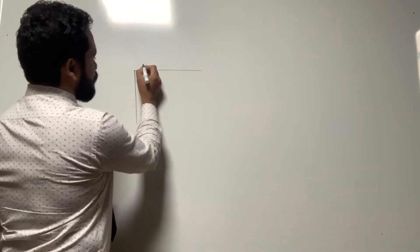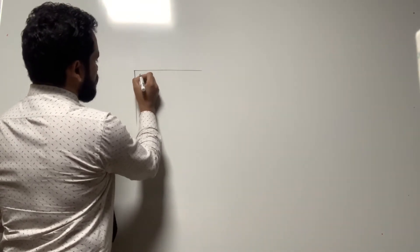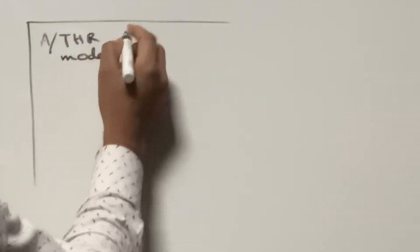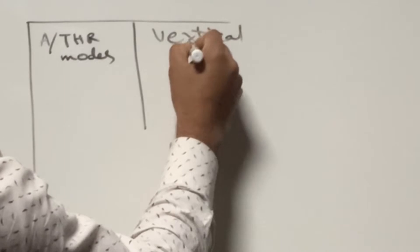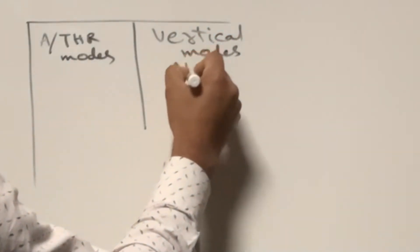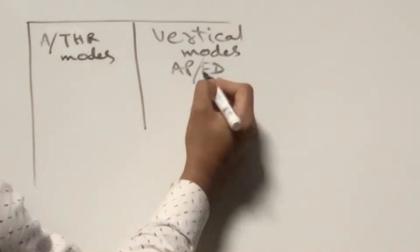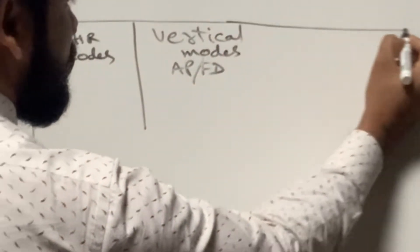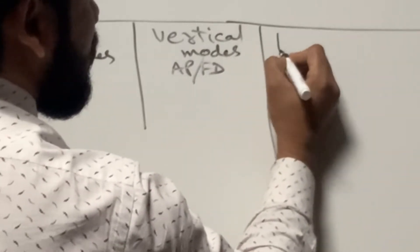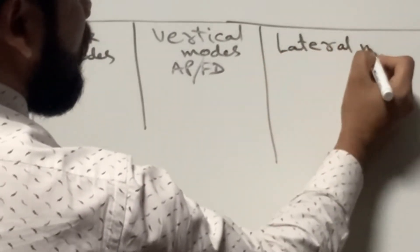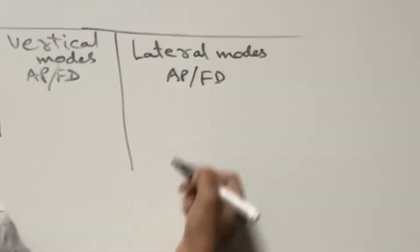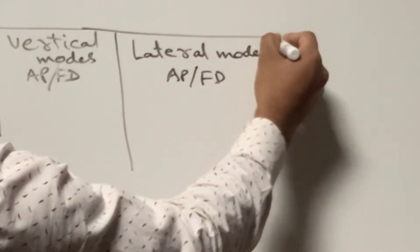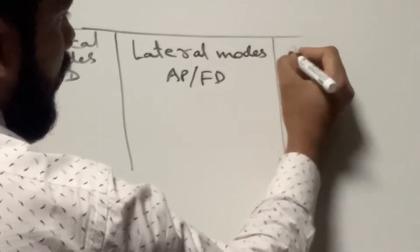The first column is for showing the autothrust modes. The second column is for showing the vertical modes of autopilot or flight director. The third column is for showing the lateral modes of autopilot or flight director.